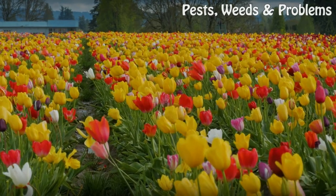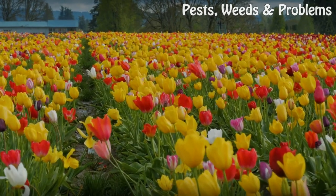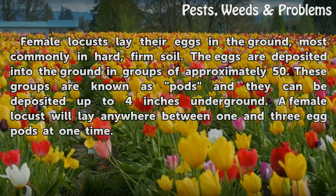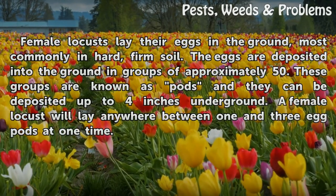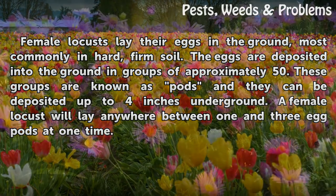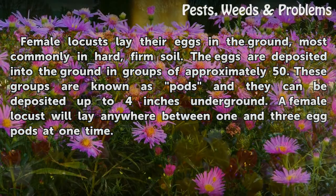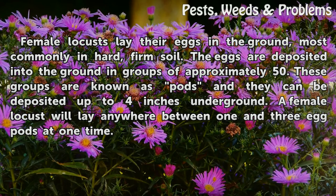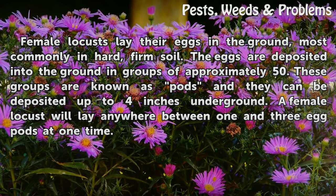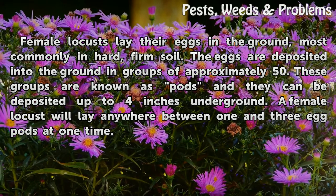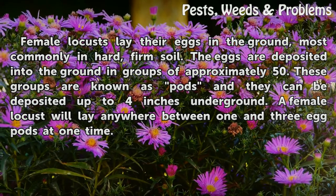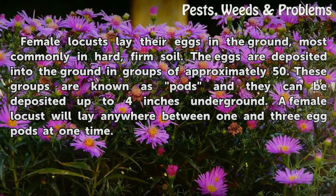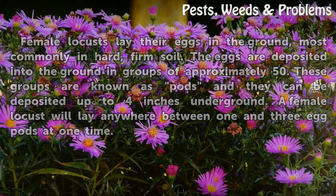Eggs. Female locusts lay their eggs in the ground, most commonly in hard, firm soil. The eggs are deposited into the ground in groups of approximately 50. These groups are known as pods and they can be deposited up to four inches underground. A female locust will lay anywhere between one and three egg pods at one time.